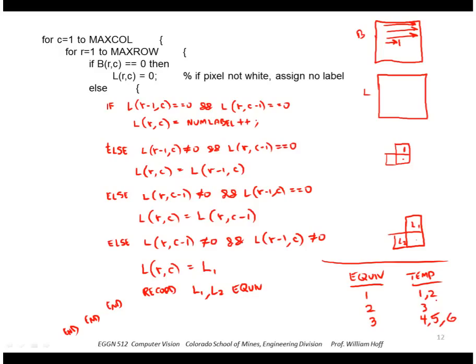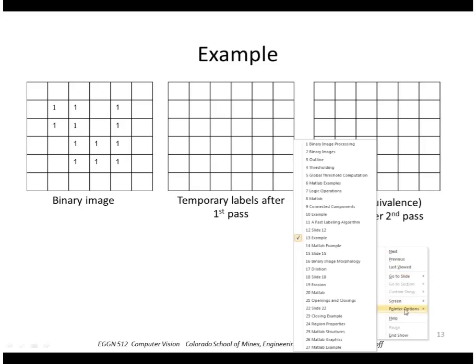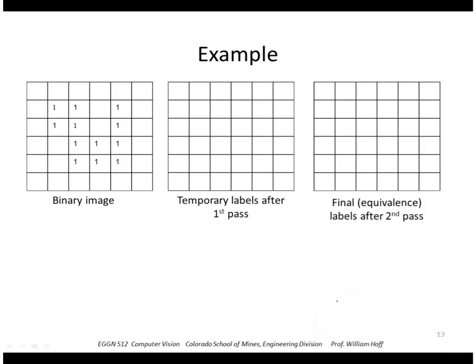So let's hand label, let's run that algorithm on this simple image here. So I go through this binary image, hit a 1. That's the first, I don't see any pixels above and to the left, so I create a new label called 1.